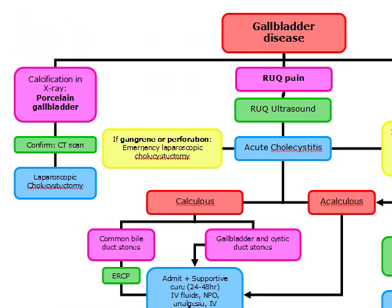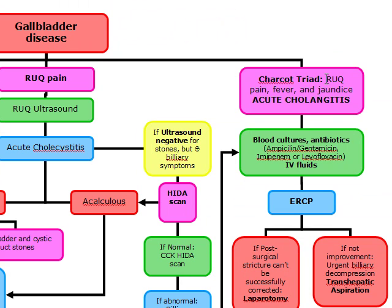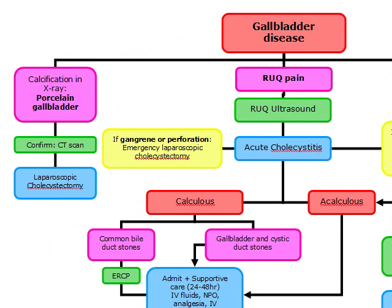A couple of easy bonus points: with Charcot's triad, you can actually get a patient who also has hypotension. If the patient has Charcot's triad plus hypotension and sepsis, this is known as Reynolds' pentad, and Reynolds' pentad has a much higher mortality rate — the mortality rate reaches 50%.